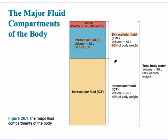However, the major compartment is what's inside of the cell. That would be the ICF, which stands for intracellular fluid. That makes up 40% of our body weight. So be sure you're aware that extracellular fluid can be subdivided into two categories, and the intracellular fluid is the most significant and largest category.